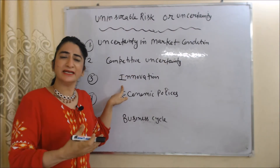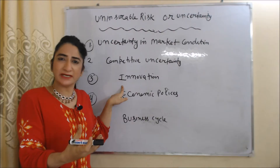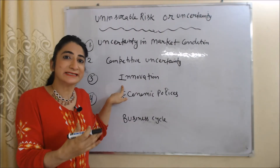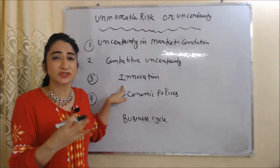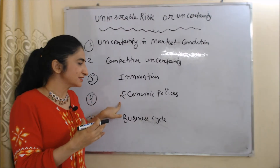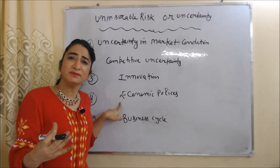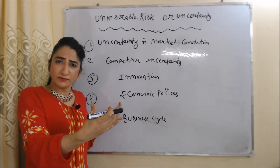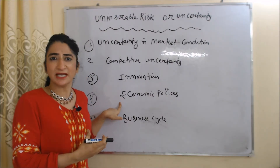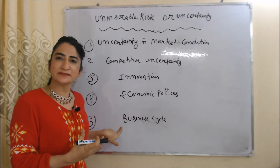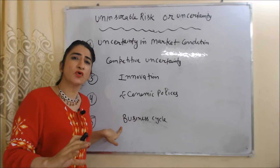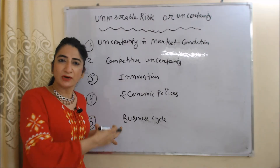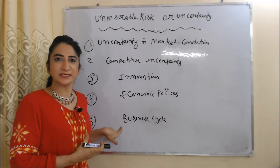Third is innovation. Any time new technology and discoveries can happen in the market, and existing firms have to go with the latest technology, otherwise they cannot survive. Next is economic policy — any time government policy can change, and sometimes because of this businesses gain and sometimes they have losses. Last is business cycle: there are so many fluctuations in the economy, like recession and depression, and because of this the profit of businesses suffers.